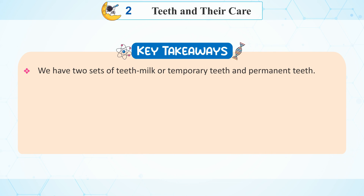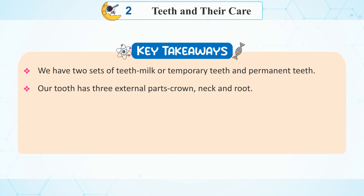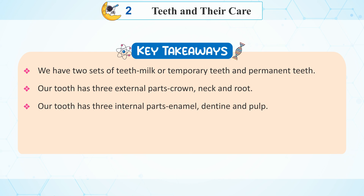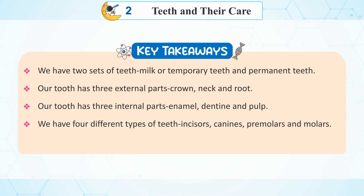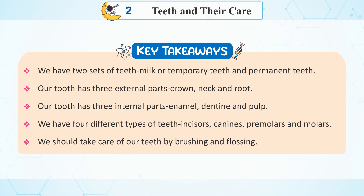Key takeaways. We have two sets of teeth: milk or temporary teeth and permanent teeth. Our tooth has three external parts: crown, neck, and root. Our tooth has three internal parts: enamel, dentine, and pulp. We have four different types of teeth: incisors, canines, premolars, and molars. We should take care of our teeth by brushing and flossing.